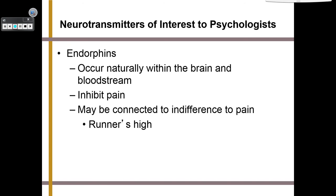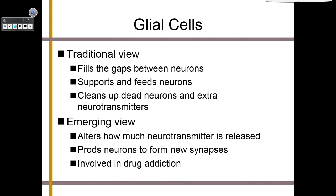Glial cells are the other brain cells that are not neurons. Traditionally we know that glial cells fill the gaps between neurons, support and feed neurons, and clean up dead neurons and extra neurotransmitters. But we also know that they alter how many neurotransmitters are released, encourage neurons to form new synaptic connections, and are involved in drug addiction. They do a whole lot besides just cleaning up after other neurons.